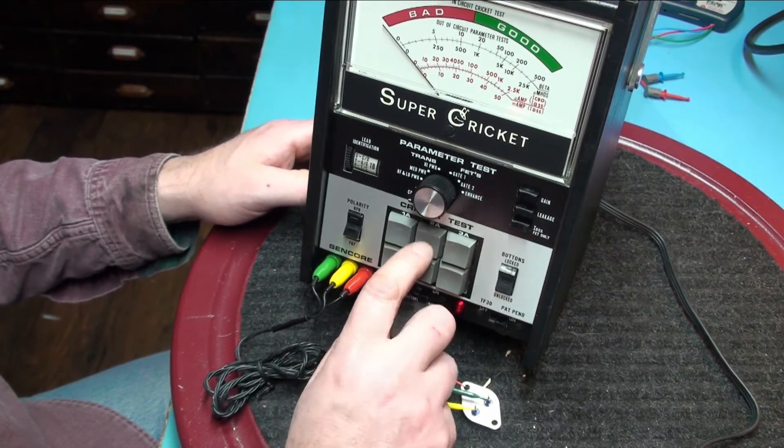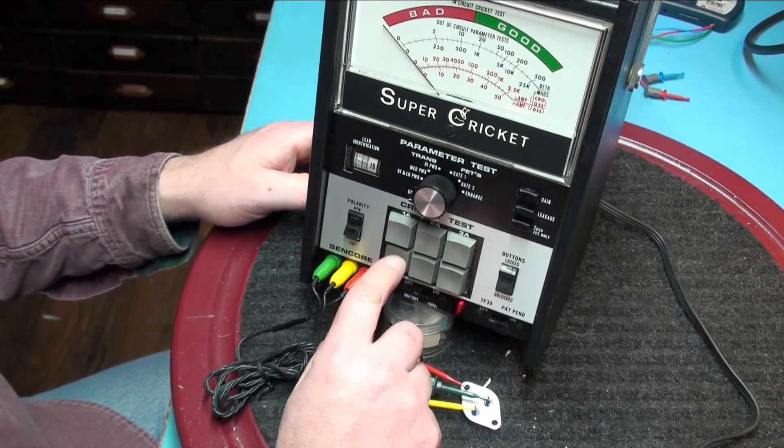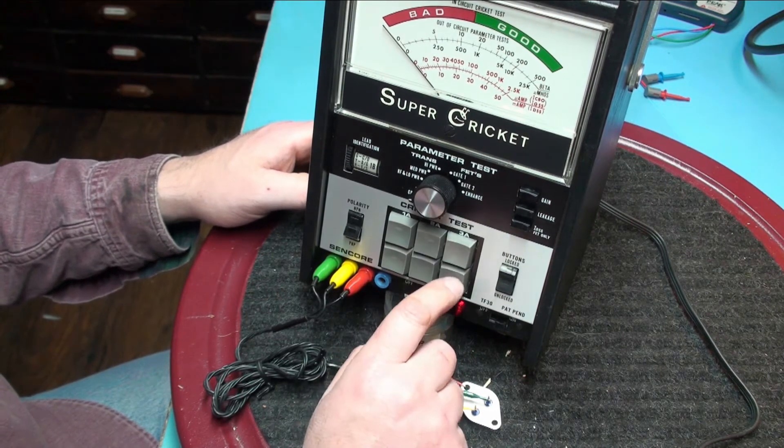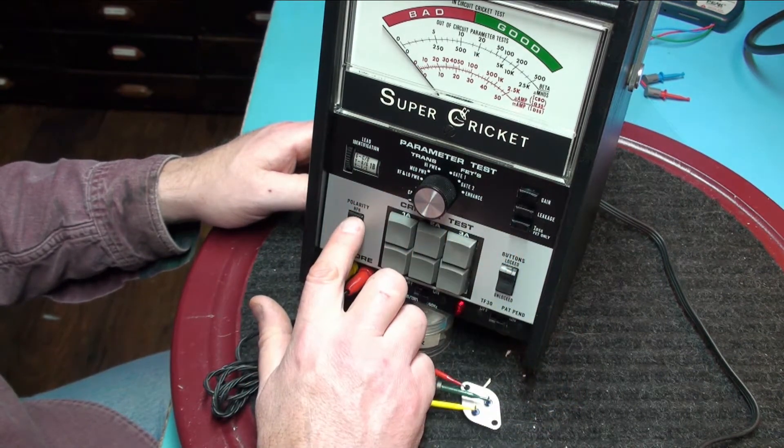So hit 1A, 2A, 3A, 1B, 2B, 3B. We didn't get any indication on the NPN polarity.